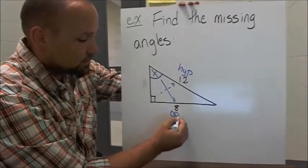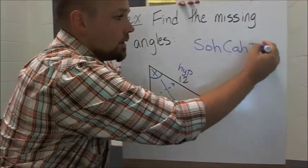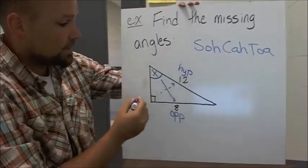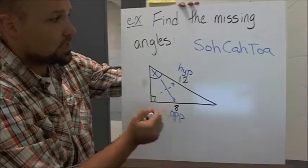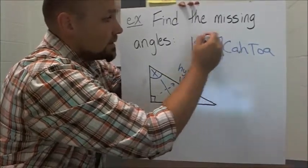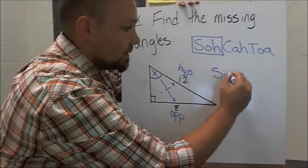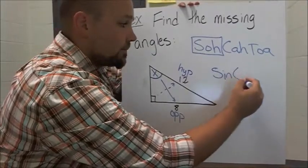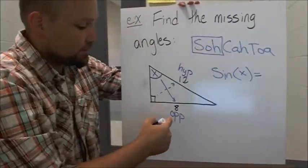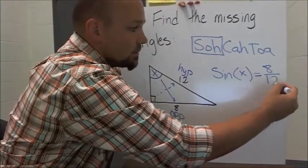So we have to think about which part of SOHCAHTOA do we want to use for this angle. So notice that we have hypotenuse and opposite, so opposite and hypotenuse is sine. So that means we can write down that sine of this angle is opposite over hypotenuse, opposite over hypotenuse.